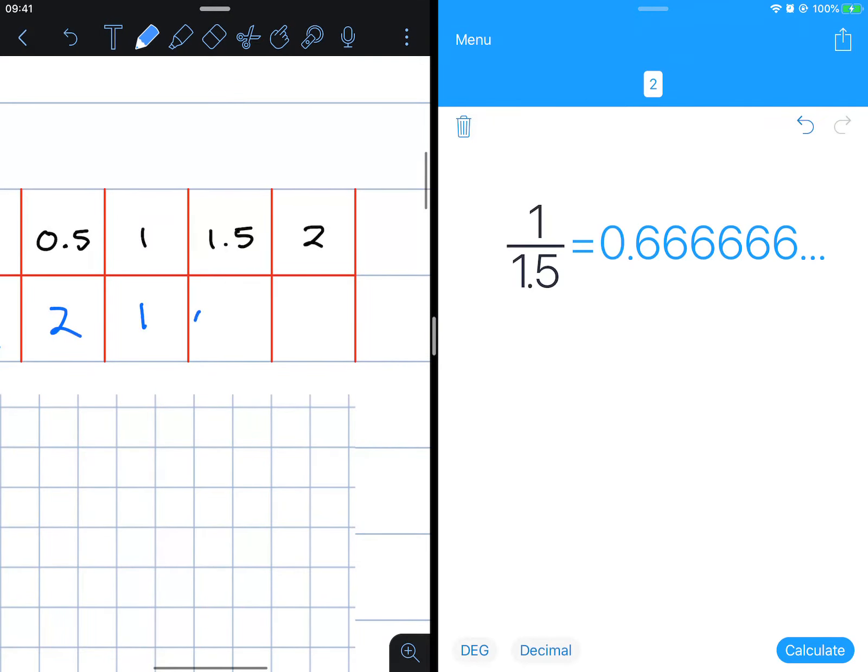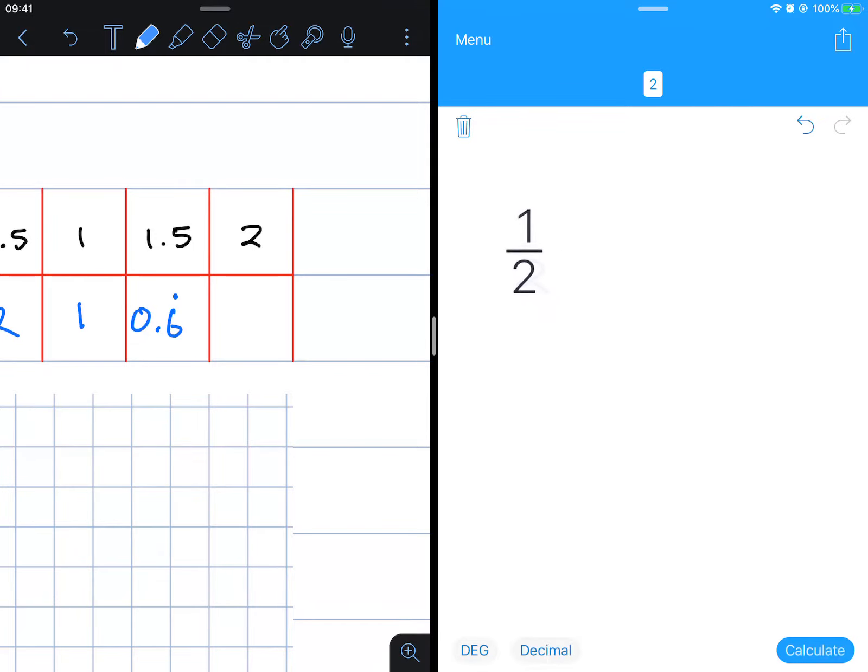Positive 0.6 recurring, and 1 over 2 is 0.5.